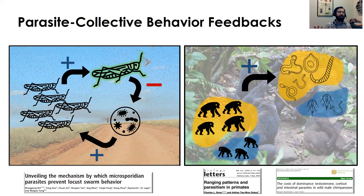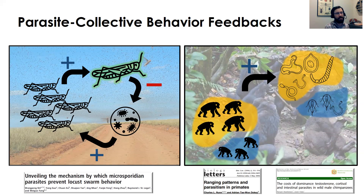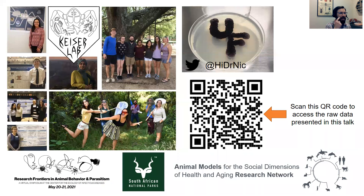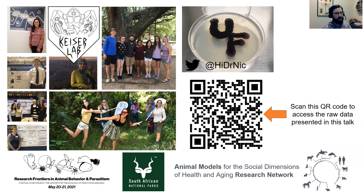There are likely many more examples of these dynamics. Focusing on the relationship between individual traits, collective behavior, and outbreak risk as a generalizable phenomenon could provide new ways to predict and prevent disease outbreaks. I want to thank my current and past lab members, and thank the organizers for inviting me — it's truly an honor to be part of this. Here is a QR code you can scan to access all the raw data from this talk.